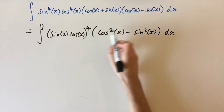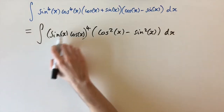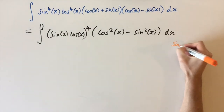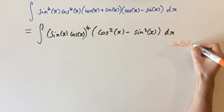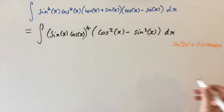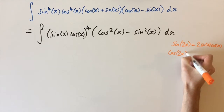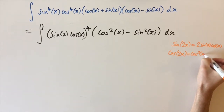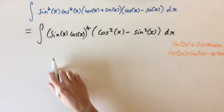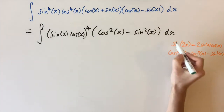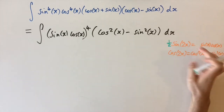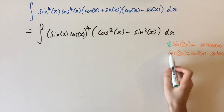Now we can see this term is exactly cosine 2x. And this first term we can express in terms of sine of 2x, and then we get something we can integrate. Let's revise our trig identities. We have sine of 2x — from the addition formulae, sine 2x equals 2 sine x times cosine x. We also have the addition formulae for cosine: cosine 2x equals cosine squared x minus sine squared x, which is exactly this term here. And this first term is actually half of sine 2x, since dividing the first equation by 2 gives us sine x times cosine x equals half sine 2x. So we can substitute these in.